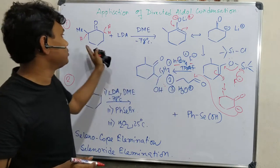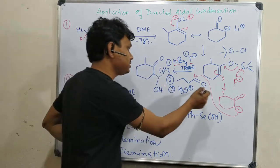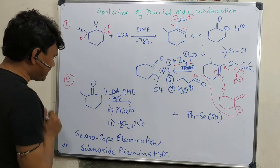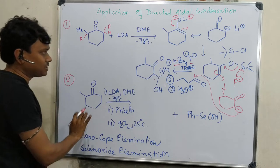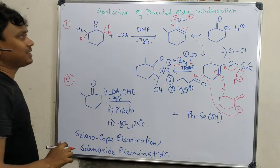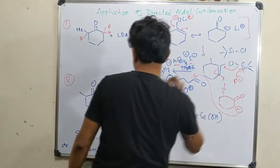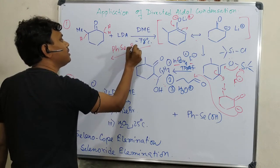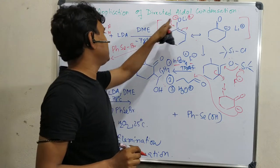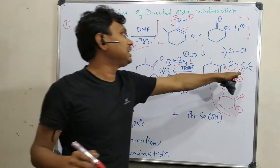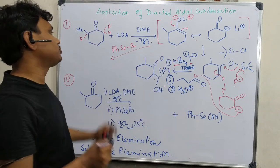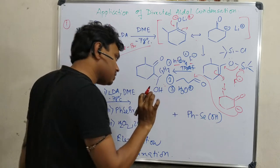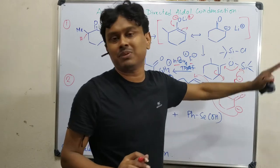The second example uses LDA in DME under the same conditions to produce the enolate. Then PhSeBr (phenylselenyl bromide) is added. There is a competition: oxygen can attack silicon-like electrophiles, or carbon can attack in an aldol-type reaction. In this case, carbon will attack the selenium because the carbon-selenium bond formed is relatively stronger, and unlike silicon, the selenium center is not stabilized by oxygen attack. Therefore, the carbon of the enolate attacks selenium and bromide leaves.